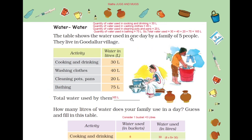Moving to the next question. The table shows the water used in one day by a family of 5 people. They live in Godalpur village. Your question is: total water used by them. It is very simple — these are the activities and these are the capacities in liters. What you have to do here is just add the water in liters. After adding, you get 165 liters as the answer.